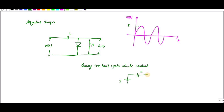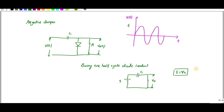Let's take the input as 5 volts. During the positive cycle the capacitor is connected with the diode conducting, so I can write: 5 volts equals the voltage across the capacitor V_C. Therefore V_C equals 5 volts during the positive cycle, and V_out equals zero.